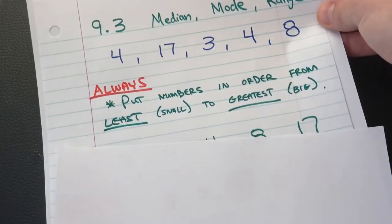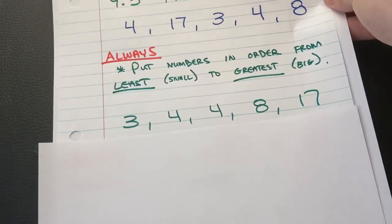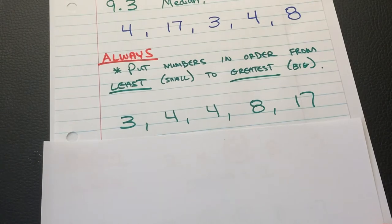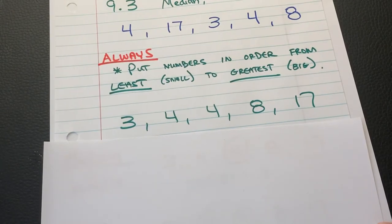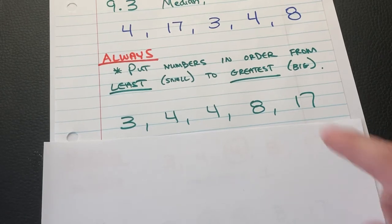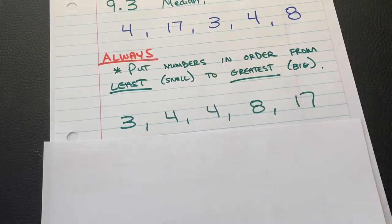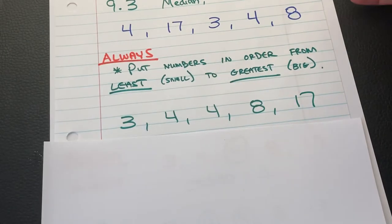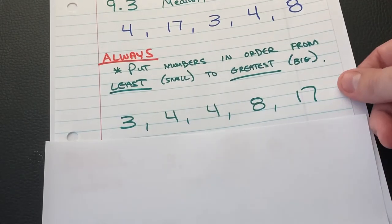So I did that for you. So if you put the numbers from smallest to biggest, it now goes 3, 4, 4, 8, and 17. Pretty simple. Remember, pause this video. You're going to do this for every problem, no matter what numbers, positive, negative, decimals, or fractions.